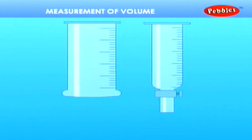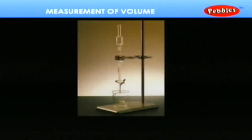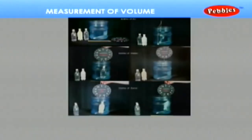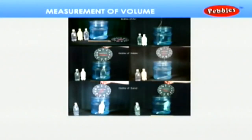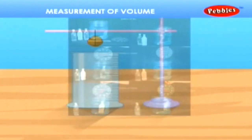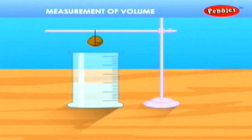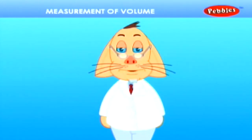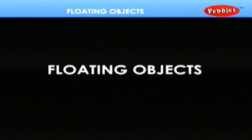In the laboratory, we measure volume by using the measuring cylinder, the burette and the pipette. A measuring cylinder can be used to measure the volume of a solid also. Take water in a measuring cylinder and note its initial level. Now, gently lower stone into the water. The water level rises. Note the new level of water. The difference between the two levels of water gives the volume of the stone.